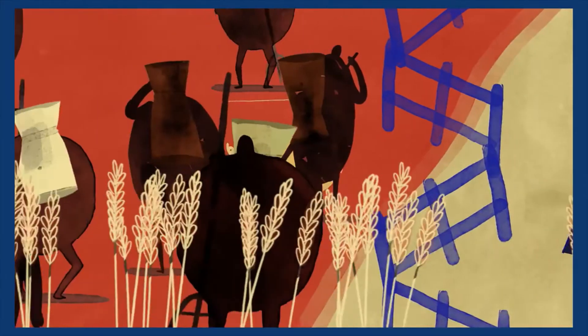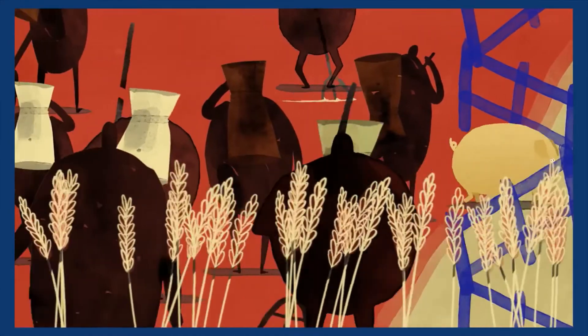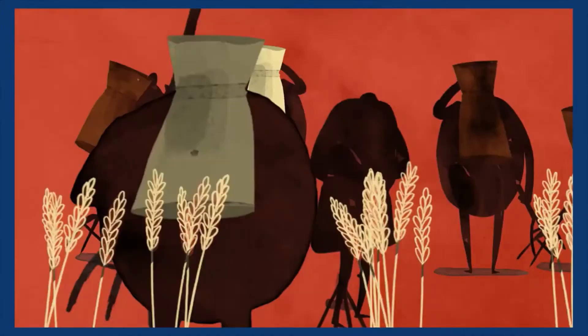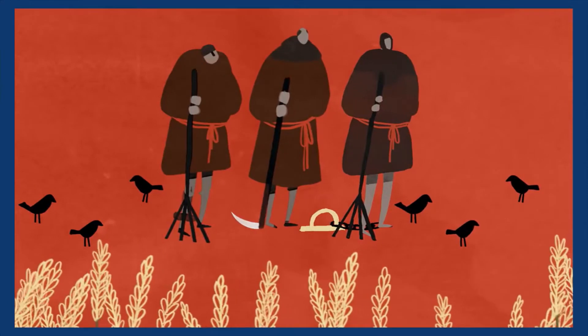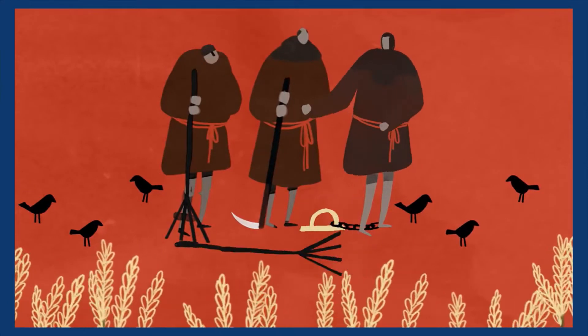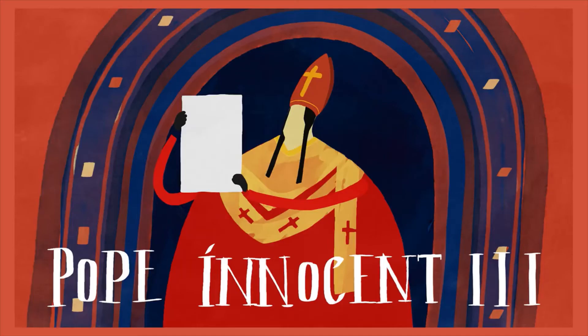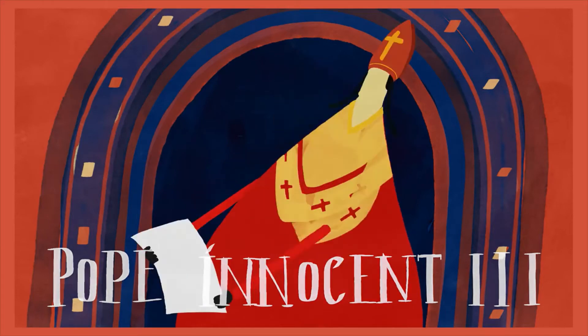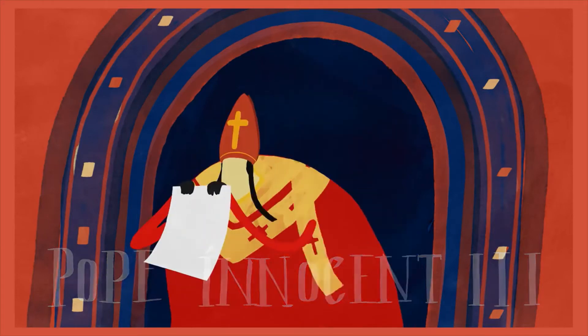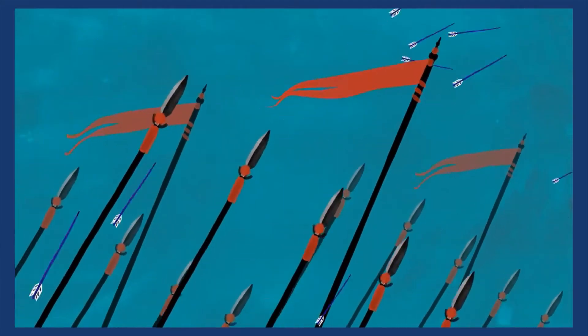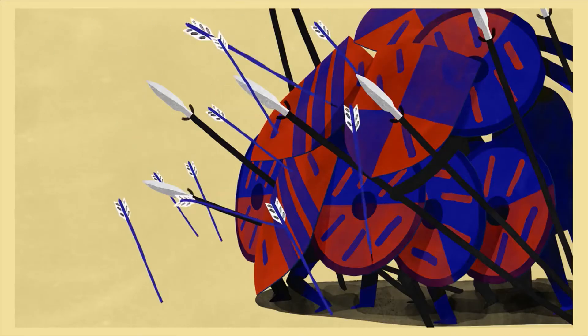The Charter only applied to free men. The vast majority of people in 1215 were unfree peasants who were ruled over by their landowners. And although Magna Carta was intended to create peace between King John and his rebellious barons, England was plunged into civil war after the Pope declared the Charter invalid.